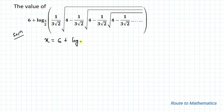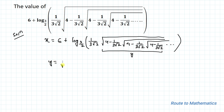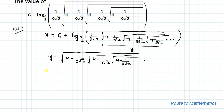So x equals 6 plus log base 3/2 of (1 divided by 3√2) times the square root of 4 minus (1 divided by 3√2) times the square root of 4 minus (1 divided by 3√2) continuing. Now we take this nesting of radicals as y, so y equals the square root of 4 minus (1 divided by 3√2) times the square root of 4 minus (1 divided by 3√2) and so on. In the next step we are going to square both sides of this equation.